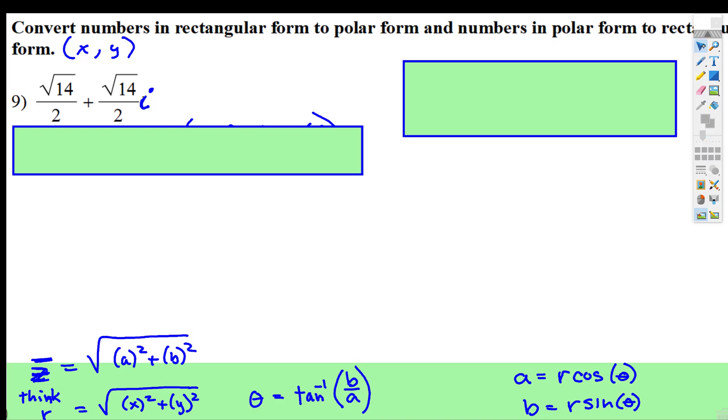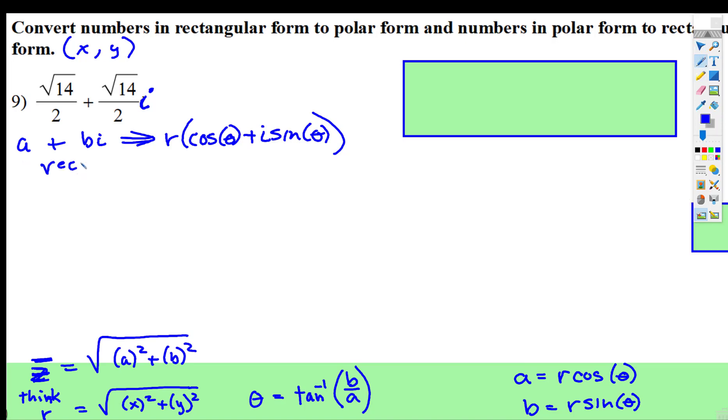The process is very similar. We want to convert this complex rectangular form to complex polar or trig form. Our magnitude is going to be the square root of root 14 over 2 squared, plus square root 14 squared.